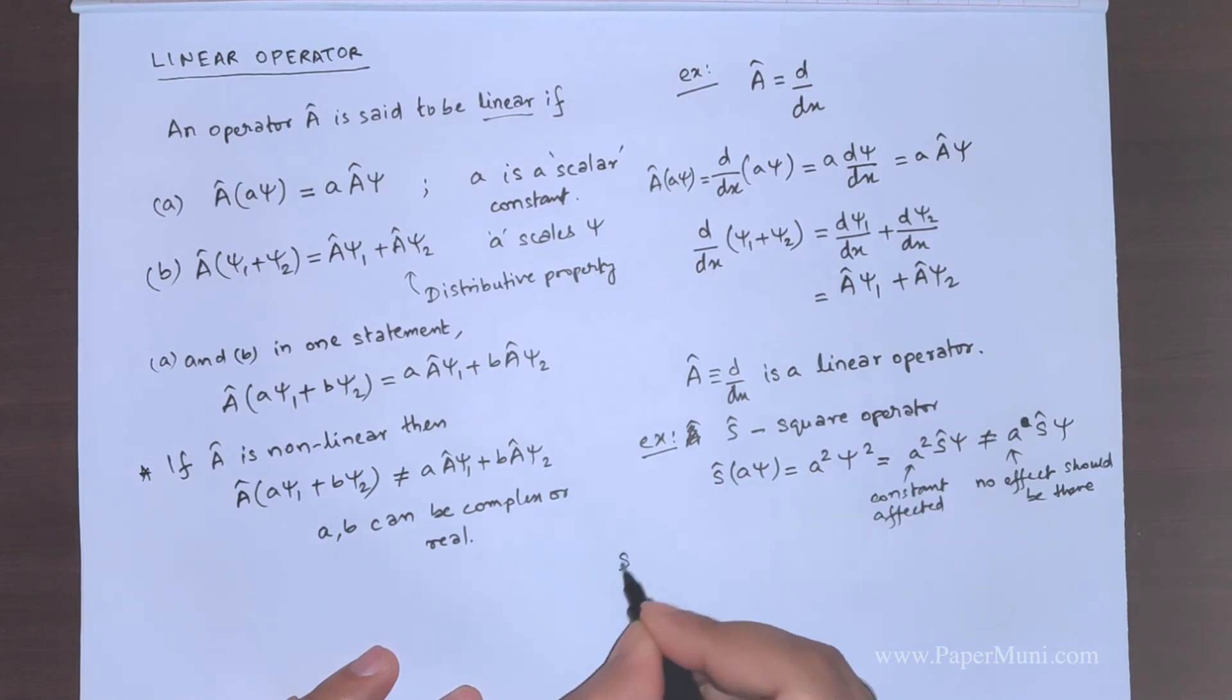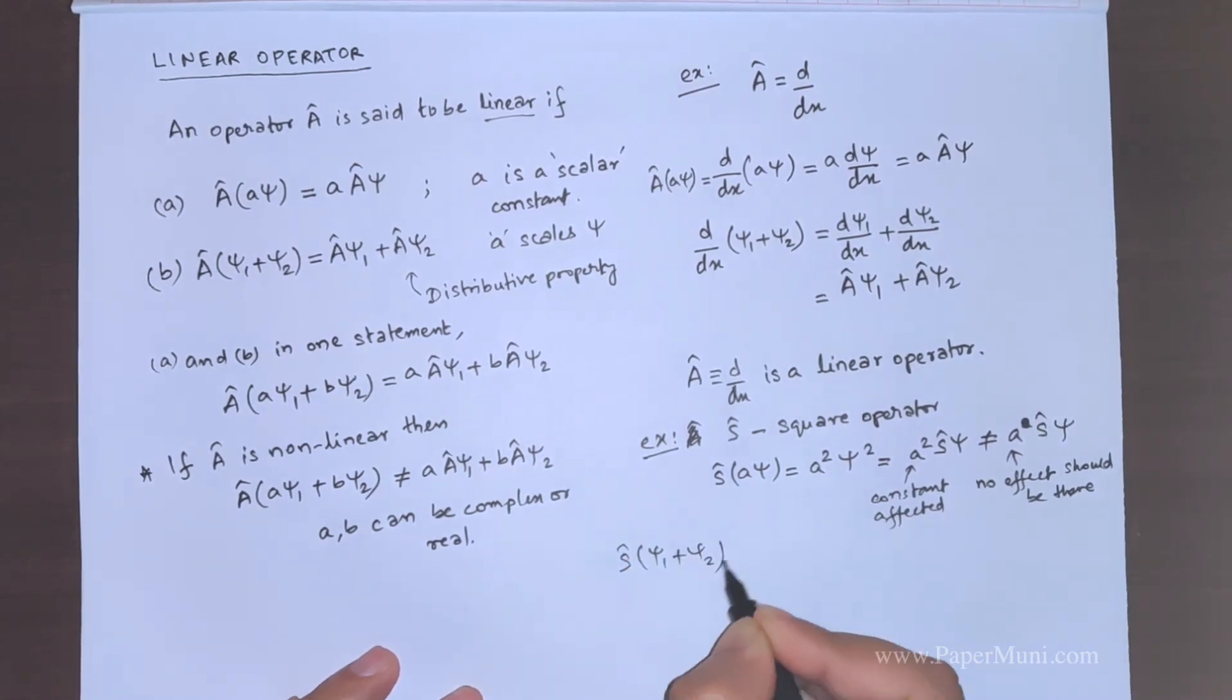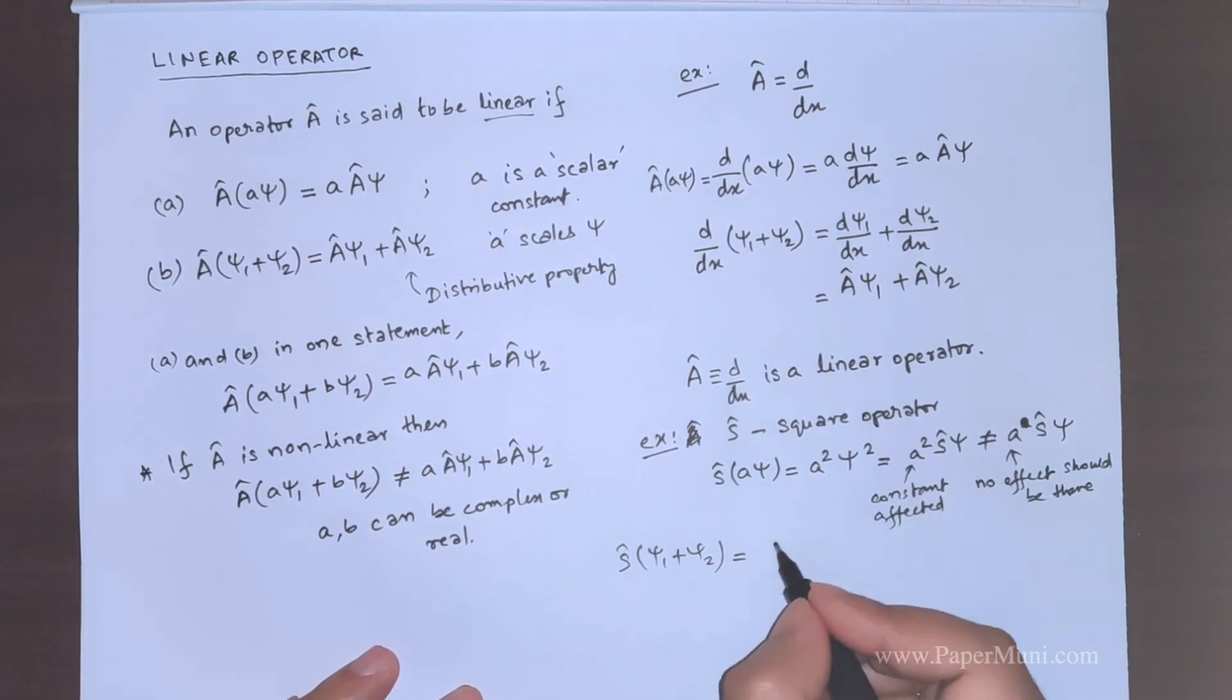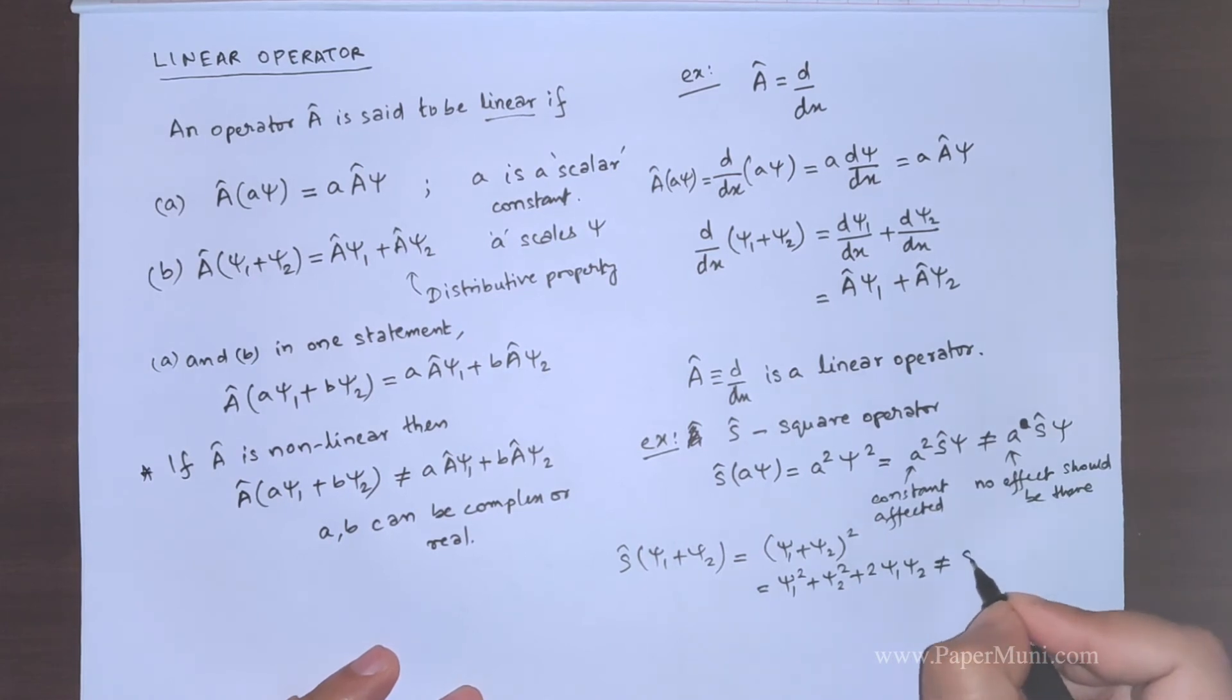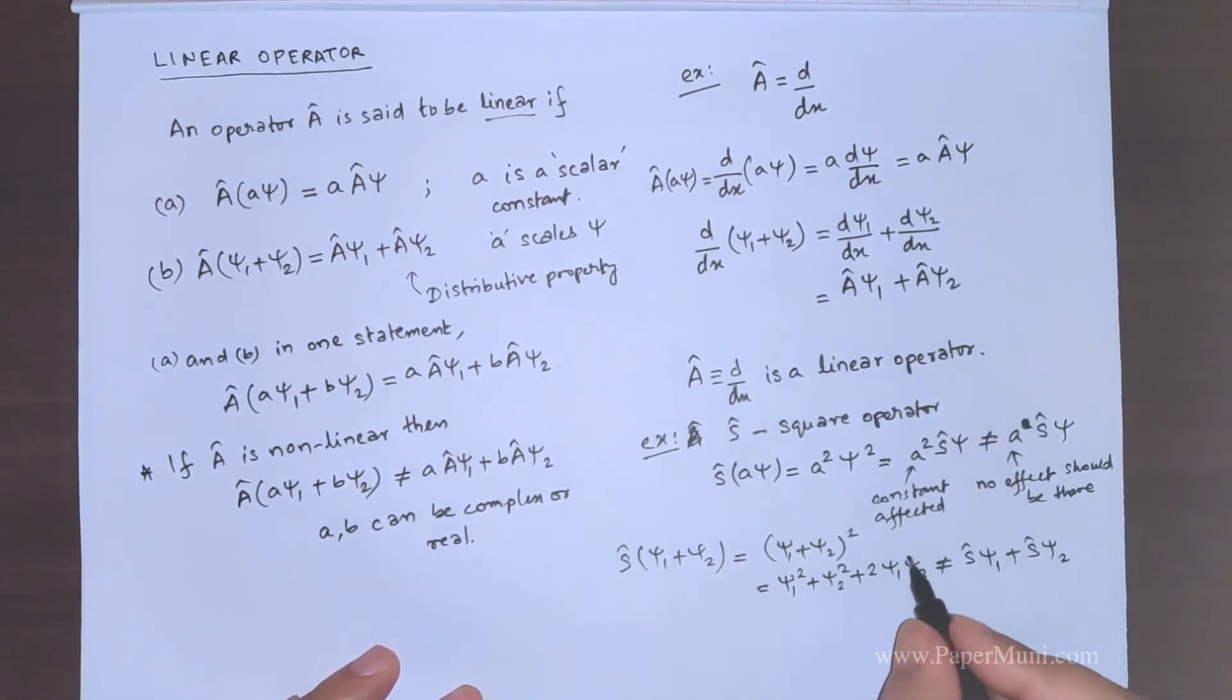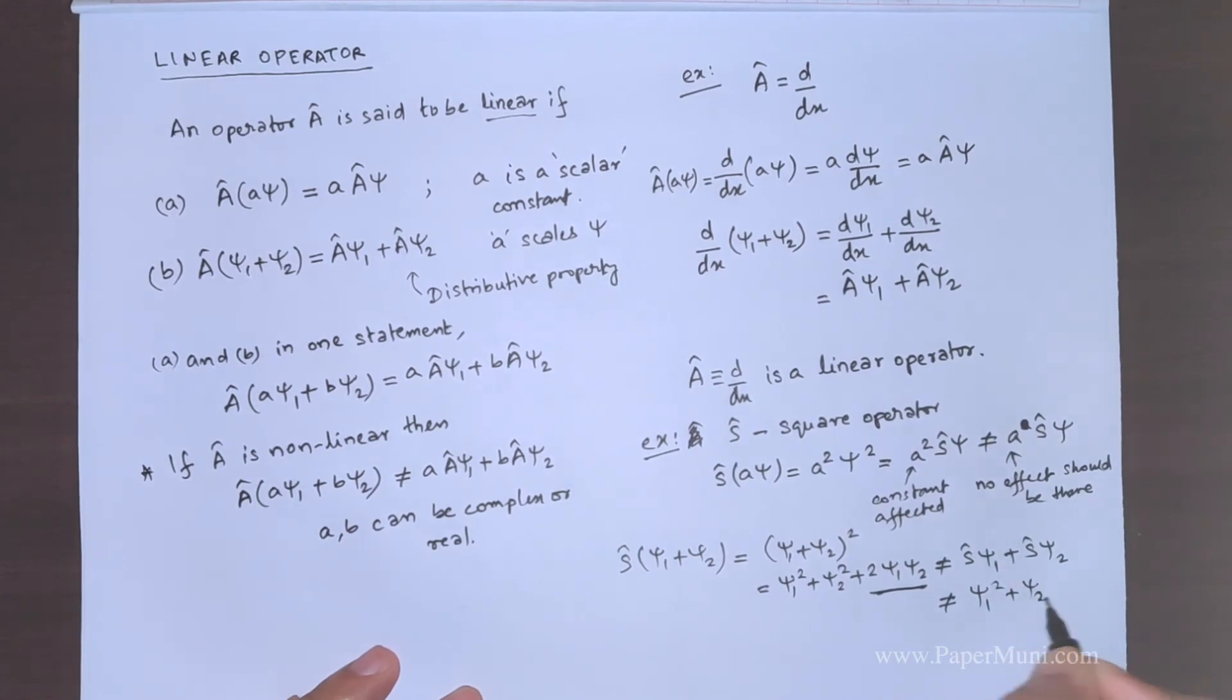If we take S operating on psi 1 and psi 2, it will just square this sum. We will get psi 1 square plus psi 2 square plus 2 psi 1 psi 2. This is not equal to, this is not equal to S operating on psi 1 and square operator operating on psi 2. Because there is an extra term here. This is equal to what? This should be psi 1 square plus psi 2 square.